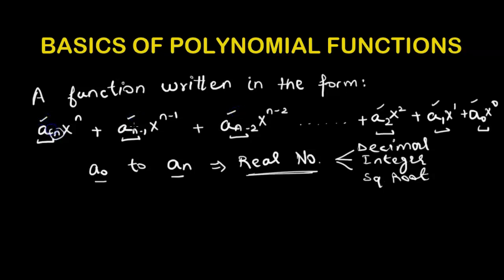The subscripts n, n-1, n-2, 2, 1, 0 do not mean these are separate subscript numbers. Rather, a_n is a real number constant for x to the power of n, and a_(n-1) is a constant for x to the power of (n-1).